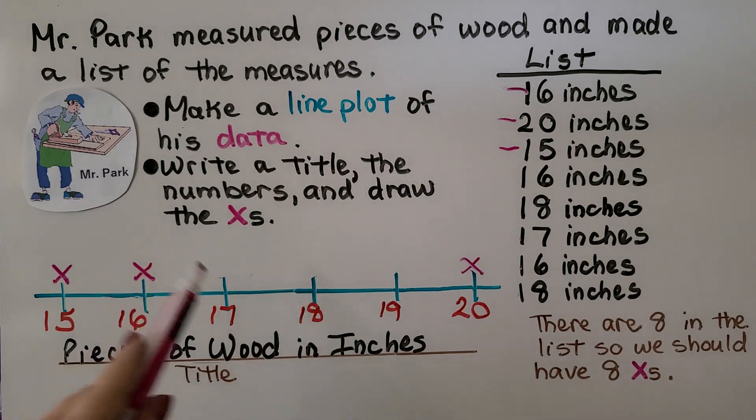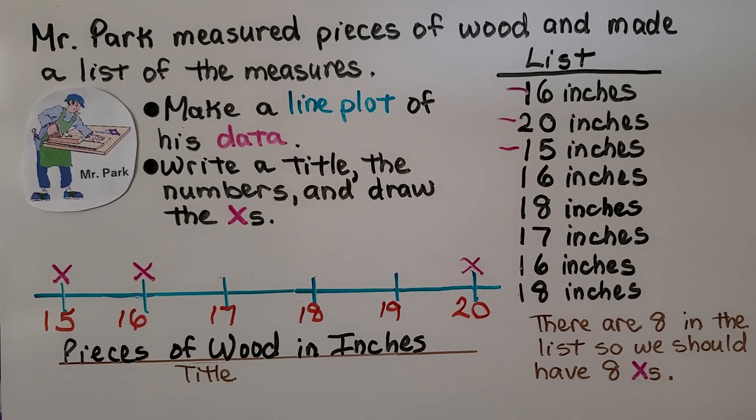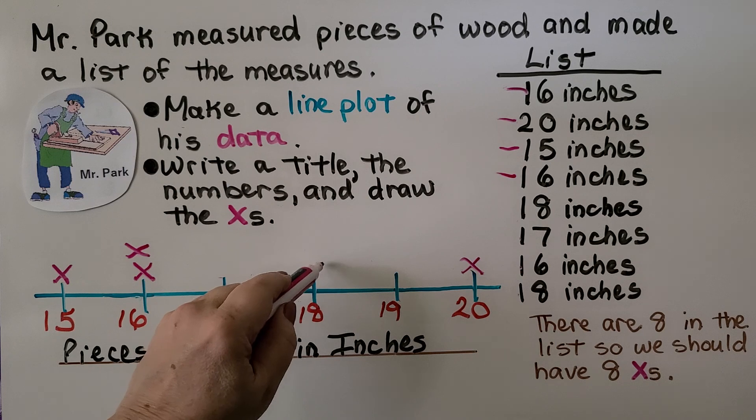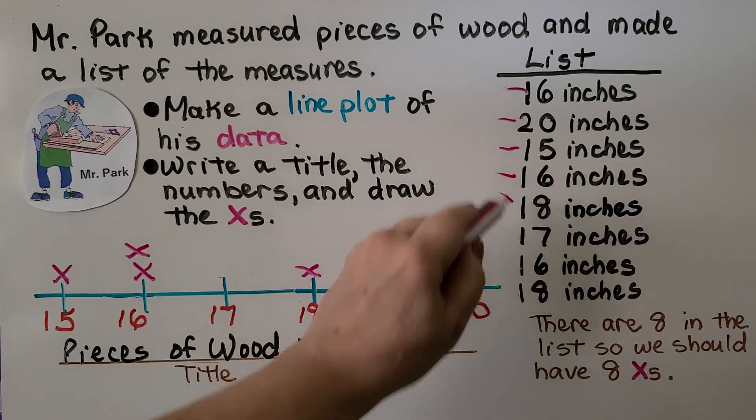We can put the x's in any order we want onto the line plot as long as we list all the data. We have a 16 inch so we can put another x above the 16 and mark that we did it. We have an 18 inch, we put an x and mark that we did it.